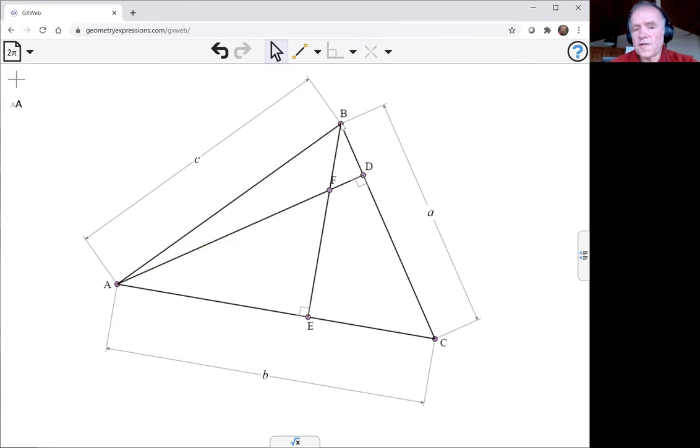Now I'm going to create three circumcircles. There's going to be one, and here's another, and here's another.